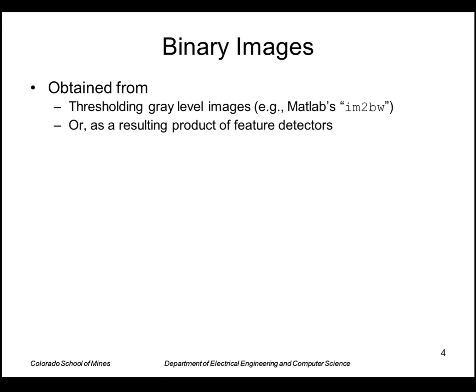So first of all, binary images—where do they come from? Well, we can get them by thresholding as we've seen before. MATLAB actually has a function called im2bw, image to black and white, which does thresholding. A little bit later in the course we'll see how to select the threshold value automatically. Another way binary images can come from is as a result of feature detectors. For example, normalized cross correlation produces a score image that you can threshold, and then those peaks represent the locations of detected templates.